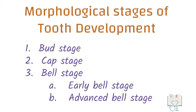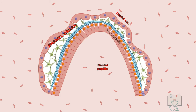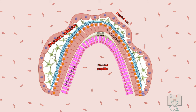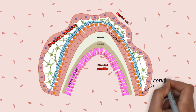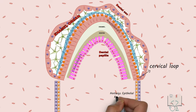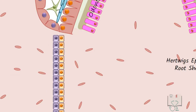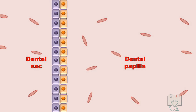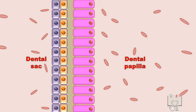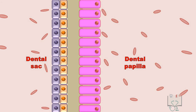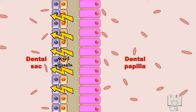Differentiation of cementoblasts: In the stages of tooth development, during the advanced bell stage, the ameloblast and odontoblast have started depositing enamel and dentine. As these depositions move cervically, the inner and outer enamel epithelium at the cervical loop give an extension called Hertwig's epithelial root sheath. This bilayered sheath has dental papilla on one side and dental sac on another. It sends signals to the cells of the dental papilla to differentiate into odontoblasts, which then start depositing the radicular dentine. This root dentine deposition sends signals for differentiation of cementoblasts.